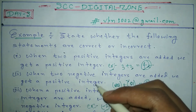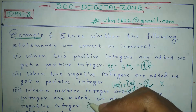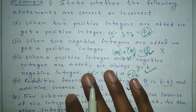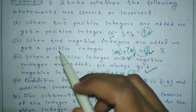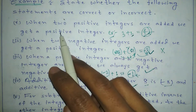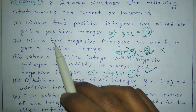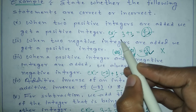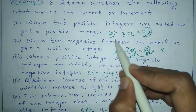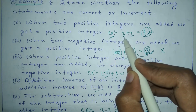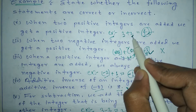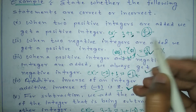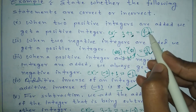In the first point: when both positive integers are added, we get a positive integer. This is obviously correct. We can also see this with an example — a positive integer added to another positive integer gives us a positive integer as the result.